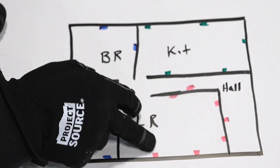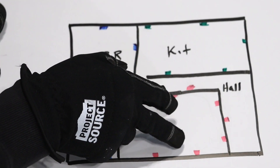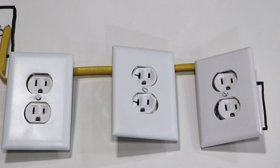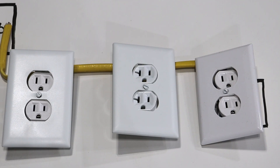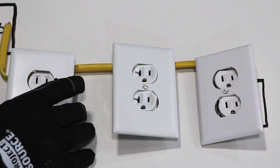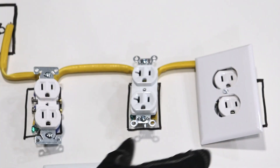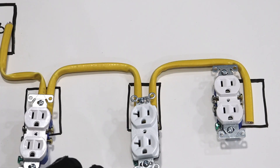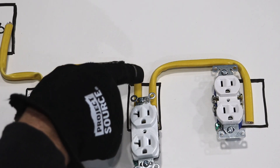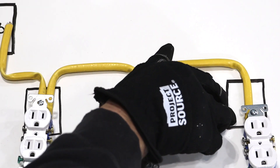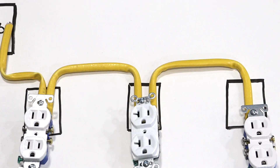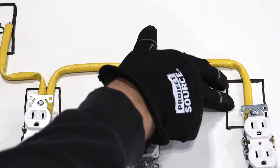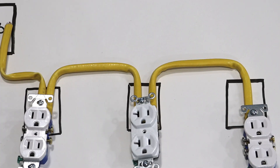Since there's no GFCI outlet powering other outlets in the living room, the GFCI approach won't help here. Instead, I can figure out which outlet is at the end of the circuit. I take off the covers of all outlets on the hot circuit. Most outlets have two Romex wires coming into them, but eventually I find one with only a single Romex wire — that has to be the end of the run, because it's not powering anything else downstream.